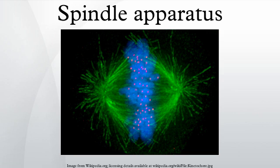Acentrosomal or anastral spindles lack centrosomes or asters at the spindle poles, respectively, and occur for example during female meiosis in most animals. In this instance, a RAN-GTP gradient is the main regulator of spindle microtubule organization and assembly. In fungi, spindles form between spindle pole bodies embedded in the nuclear envelope, which does not break down during mitosis.